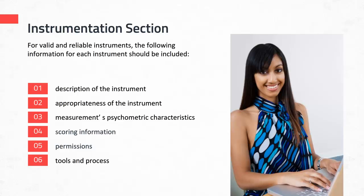Next, talk about the measurement's psychometric characteristics — its structure (subscales, instrument items), its validity (whether content validity, predictive or concurrent validity, or construct validity, and how that was established through previous studies), and its reliability. Is it internally consistent? What have other studies reported for Cronbach's Alpha for the entire instrument and for each subscale? Perhaps also discuss test-retest reliability or inter-rater reliability.